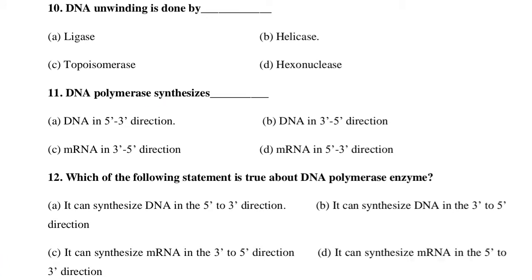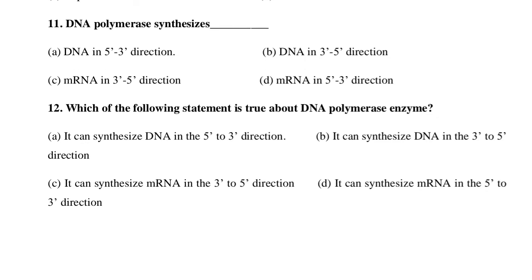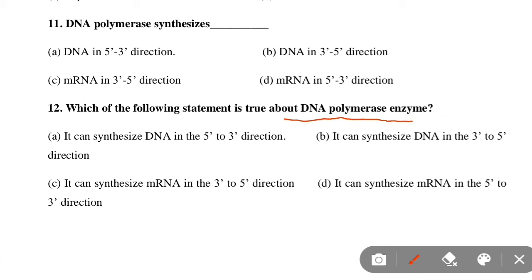Next MCQ: DNA polymerase synthesizes DNA in — Option A: 5' to 3' direction, Option B: 3' to 5' direction, Option C: mRNA in 3' to 5' direction, Option D: mRNA in 5' to 3' direction. Option A is correct — DNA is synthesized in the 5' to 3' direction.